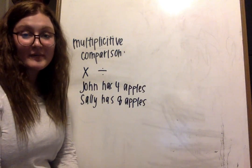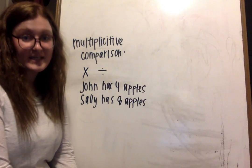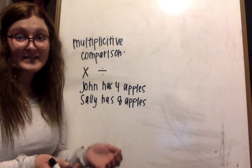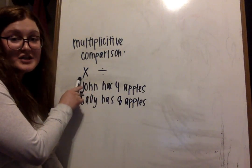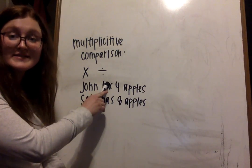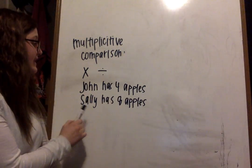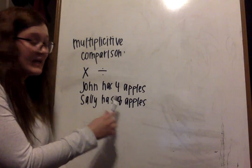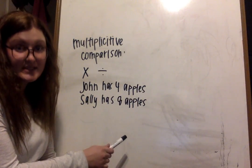We're going to talk about multiplicative comparison — this is comparing two different things using multiplication or division. An example of that would be saying John has four apples and Sally has eight apples.